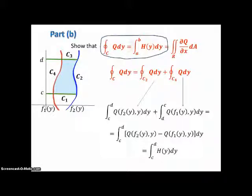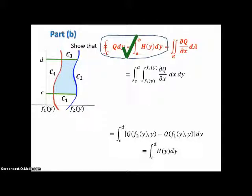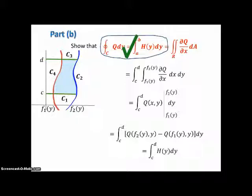That's the first half of Part B. Now we iterate the double integral over this region by letting X go from F1(y) to F2(y), and Y go from C to D. The partial derivative of Q with respect to X, integrated backwards with respect to X, gives Q(x,y) evaluated from F1 to F2. When we substitute F1 and F2 into Q for X, we get the very same integral as before, confirming the second half of Part B.